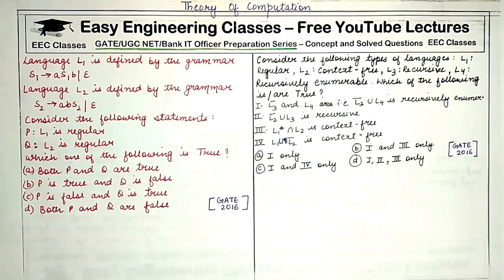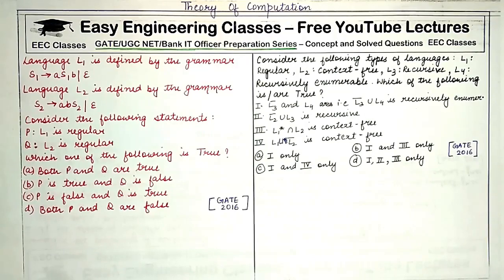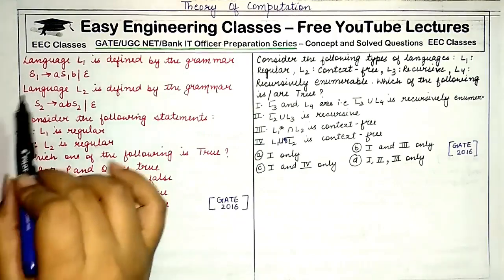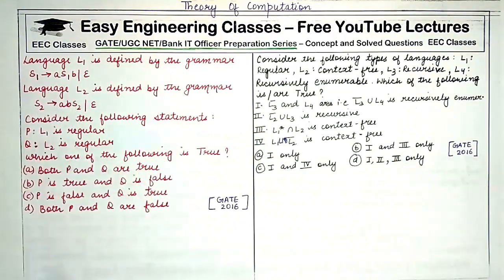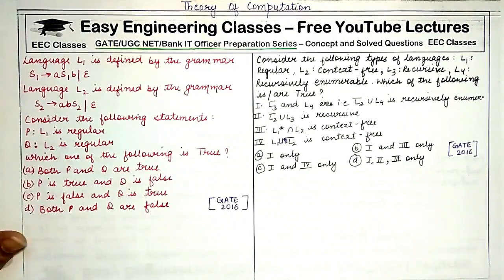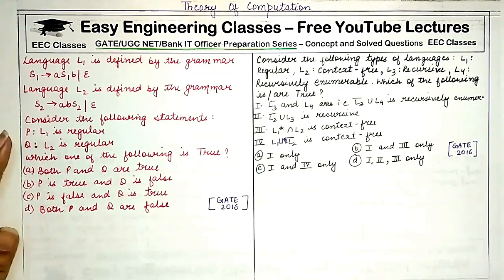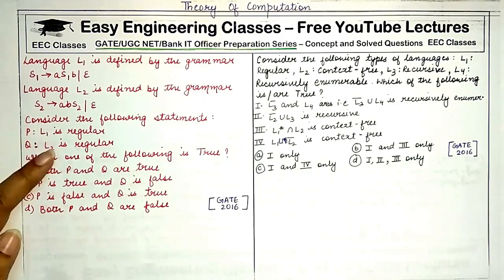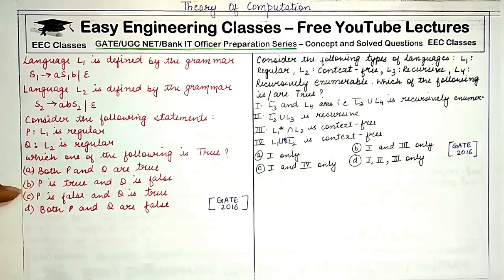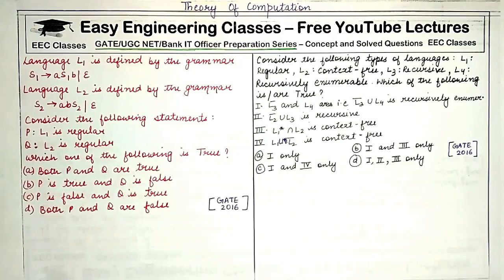Starting with our first question: language L1 is defined by the grammar S1 goes to AS1B or epsilon, and language L2 is defined by the second grammar starting from symbol S2. We have to consider statements P and Q which state that L1 is regular and L2 is regular, and determine which of the two statements are true.